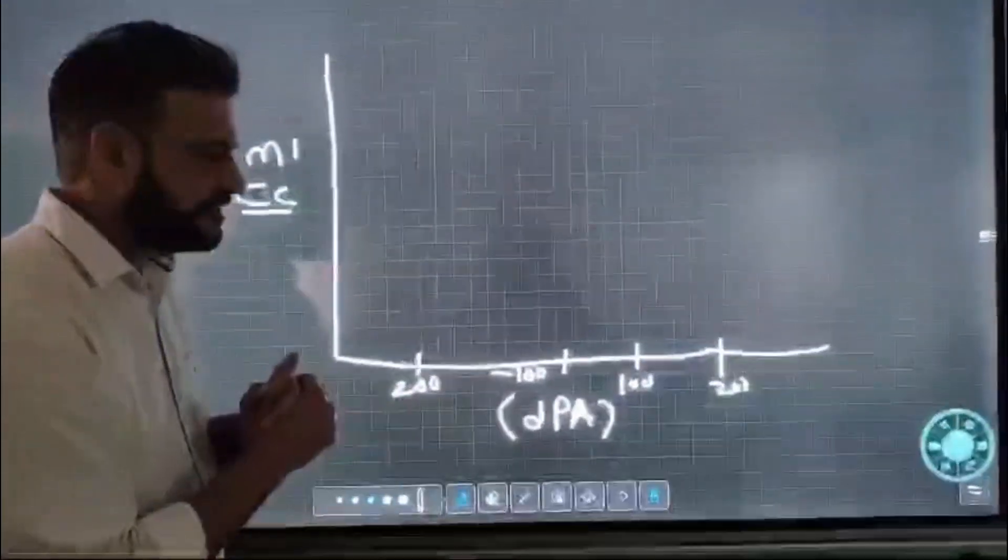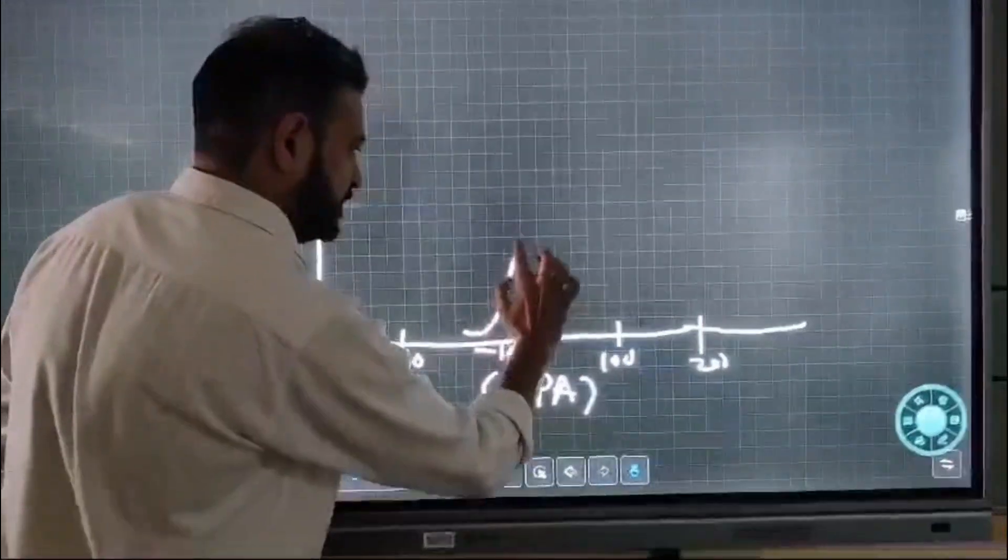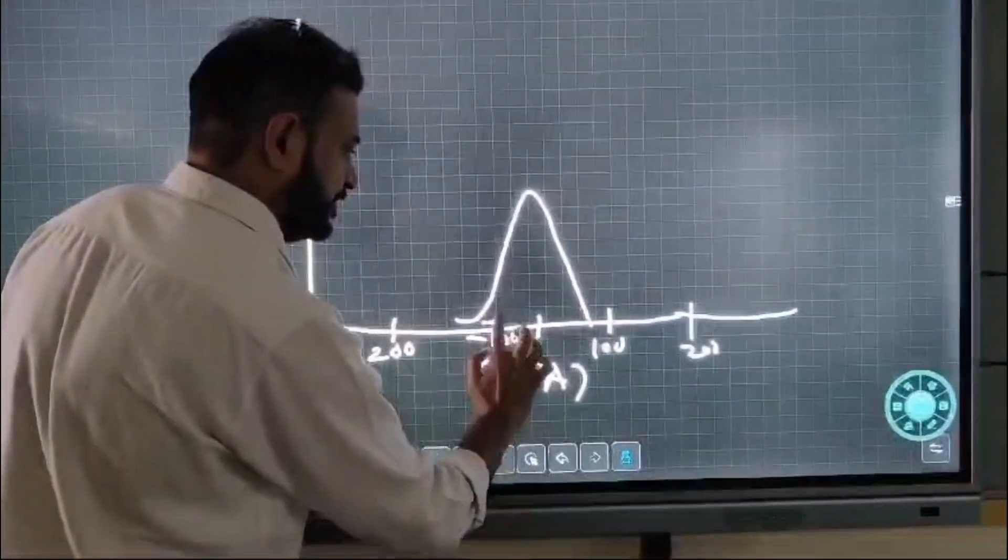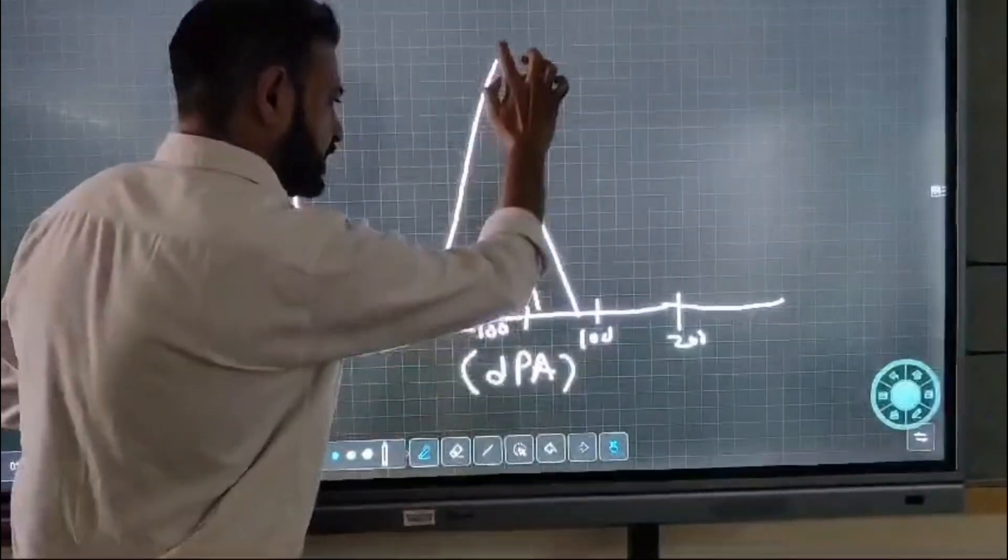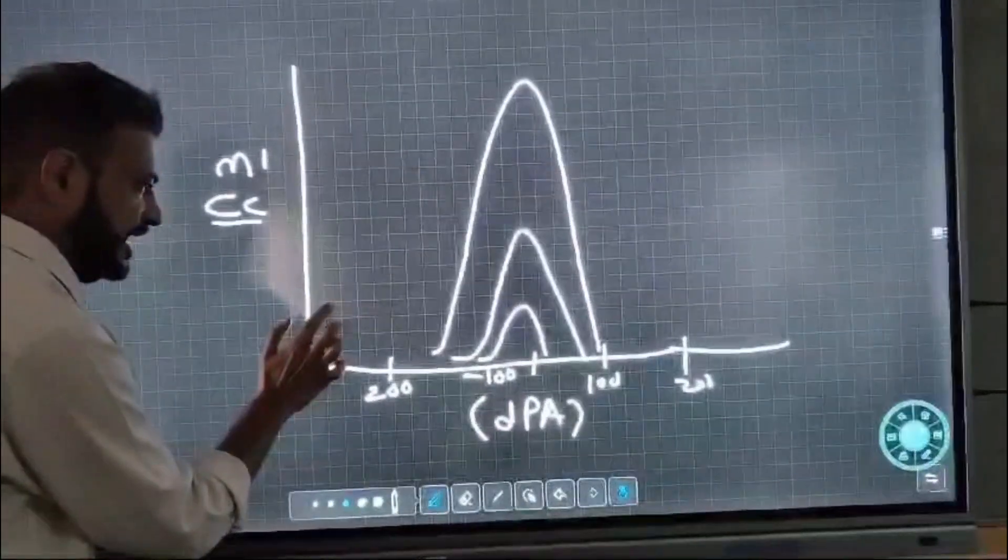There are different kinds of curves that we get. The curves can be small or large. When we read them, we look at the height of the curve.